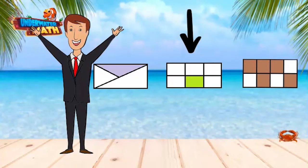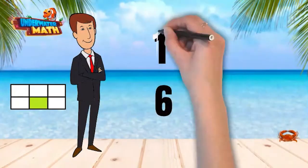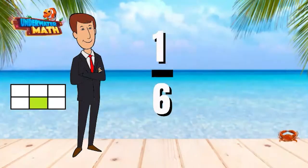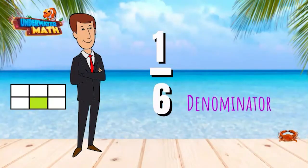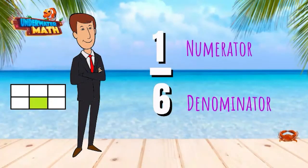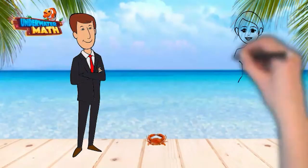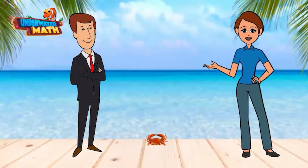This unit fraction is one-sixth. It has six equal parts to make the whole — this is the fraction's denominator. The model has one piece shaded in, which is the numerator. Remember, a unit fraction requires the numerator to be one. How did they do? Swimmingly great — great job, everybody!